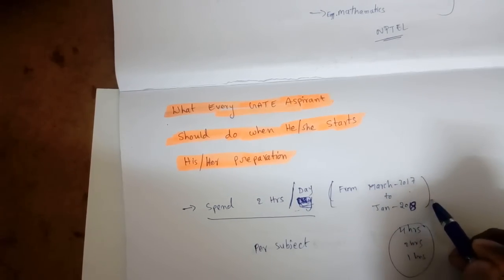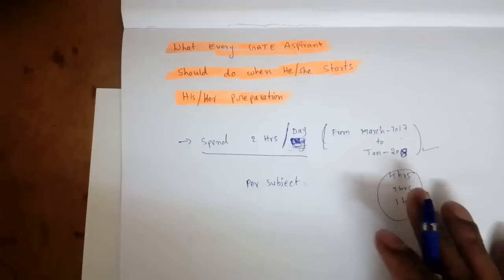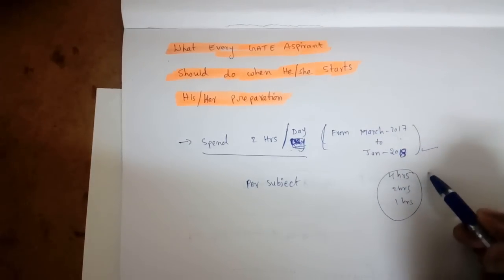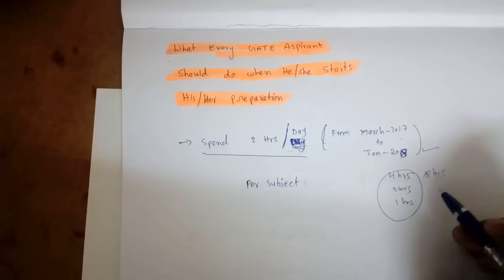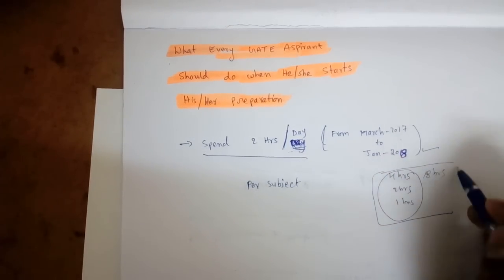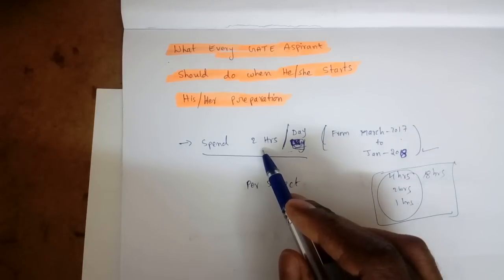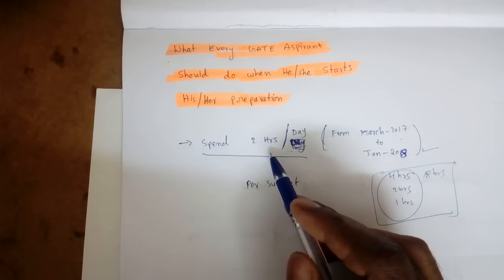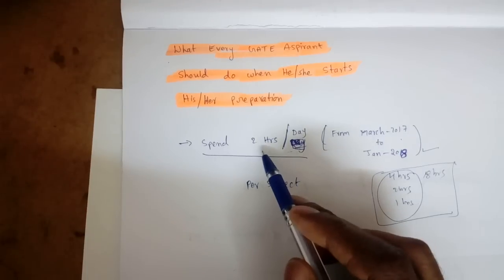No one can stop you from getting a good rank in GATE, that's for sure. It should not be like one day you're studying four hours, one day eight hours, sometimes no study at all. That should not be a good procedure. If you spend each day two hours, for one hour we can learn new concepts and one hour we can do problems on those concepts. Take any one subject for one month.